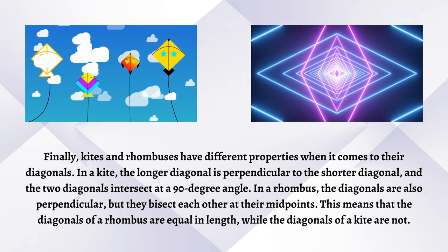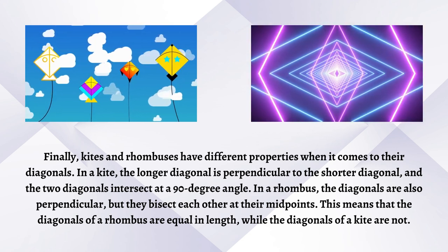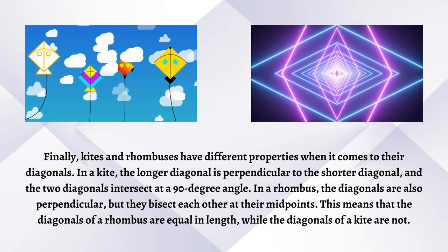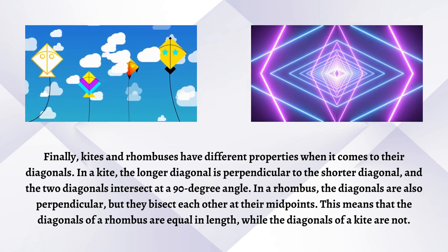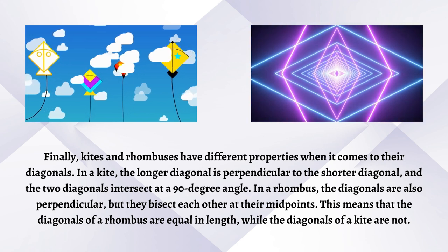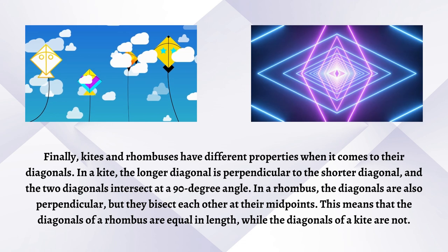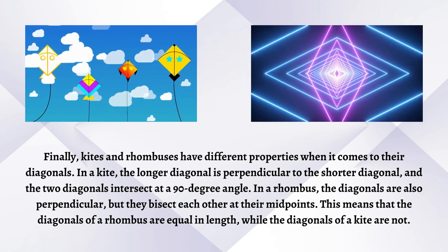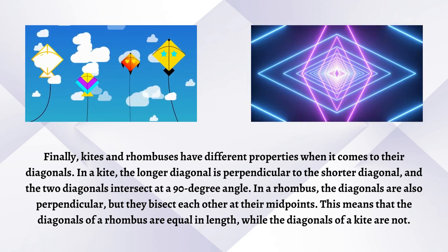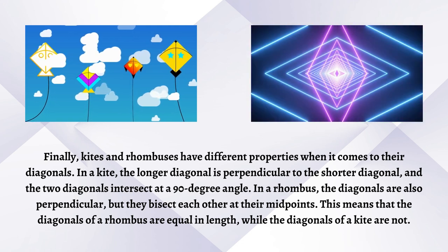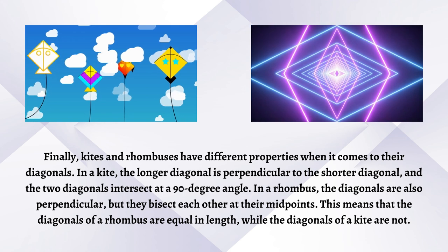Finally, kites and rhombuses have different properties when it comes to their diagonals. In a kite, the longer diagonal is perpendicular to the shorter diagonal, and the two diagonals intersect at a 90-degree angle. In a rhombus, the diagonals are also perpendicular, but they bisect each other at their midpoints. This means that the diagonals of a rhombus bisect each other equally, while the diagonals of a kite do not.